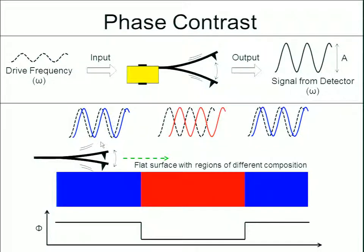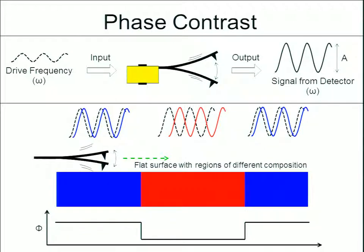What this means is we can clearly see that these are unique regions on the surface, even though there's no difference in height. There are differences in composition, and we can detect that using phase contrast in tapping mode AFM. When we plot this information as an image, we're plotting not height but the phase lag, using a color scale to produce an image that makes sense to us.